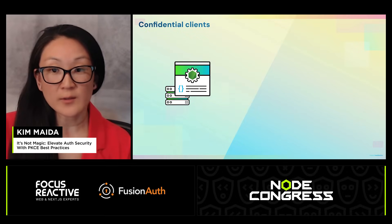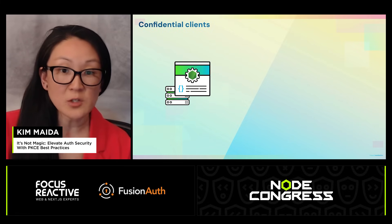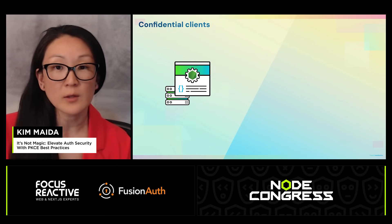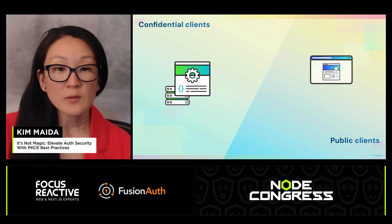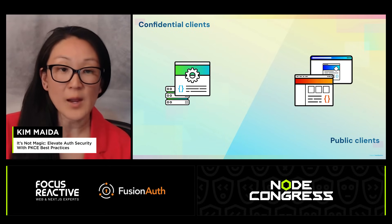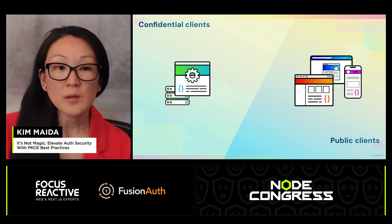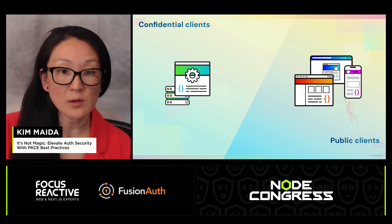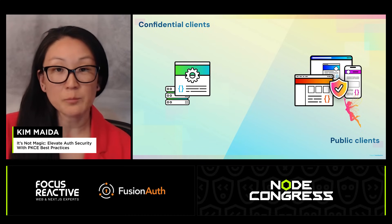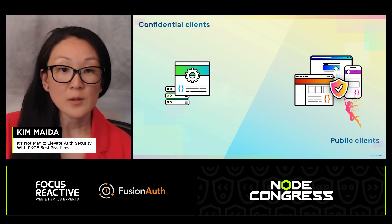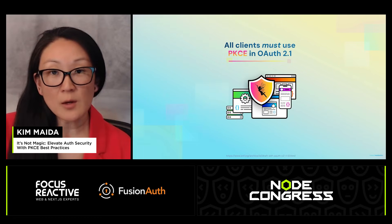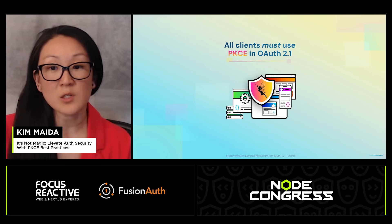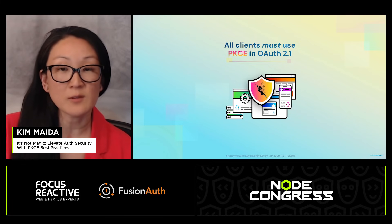Node apps are confidential clients, meaning they're web apps that run in a centralized location and are capable of securely storing client secrets. Public clients, on the other hand, are apps that are downloaded and run on a user's device — this includes browser-based apps like single page apps, as well as native desktop and mobile apps. Under the current best practice released in January, PKCE must be used by public clients when performing auth in the front end. For confidential clients, PKCE is recommended for added security. But in the upcoming OAuth 2.1 spec, all clients will be required to use PKCE with authorization code flow in order to be standards compliant.